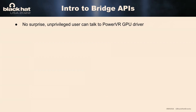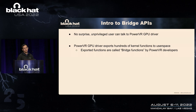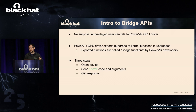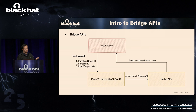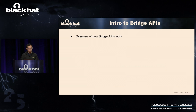There's no way to restrict unprivileged user access to the PowerVR GPU driver, and the PowerVR GPU driver exports hundreds of kernel APIs to user space — PowerVR developers call them bridge APIs or bridge functions. There are three steps for talking to the device driver: opening the device, ioctl, and getting the response. A user space program uses the ioctl syscall, providing a function group ID, function ID, and input/output data to the device driver, which invokes the exact bridge API and sends results back.